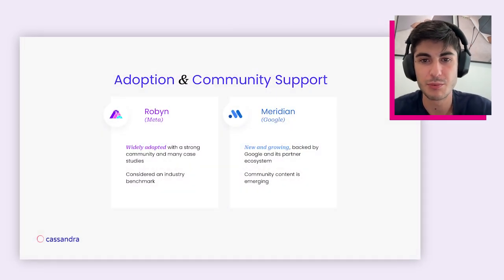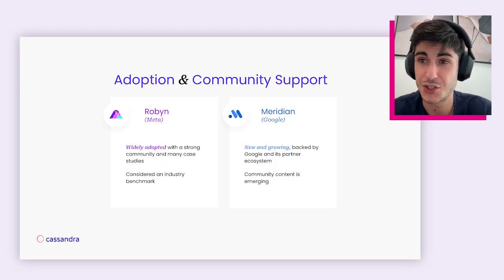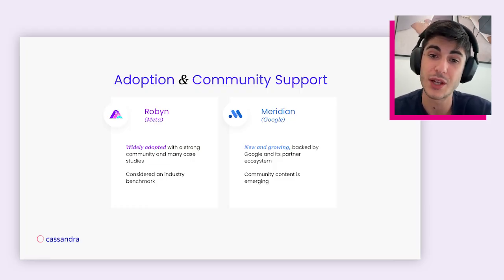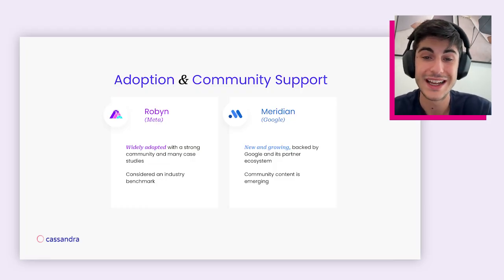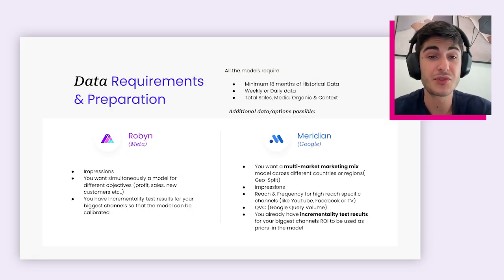In terms of adoption and community support: Robyn is the oldest — the first open source marketing mix modeling framework shared in the market. It has the highest adoption and a really strong community. On the other side, there is Meridian, which is new but is the fastest growing right now, backed by Google, and all partners are working together to improve it very fast, make it affordable, and really accessible for everybody.